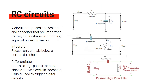RC circuits are a circuit comprised of a resistor and capacitor. They are important because they can reshape the incoming signals of pulses or waves. If you supply an alternating current signal coming in, you can reshape it or reduce the power coming in using integrator circuits, which only pass signals below a certain threshold.